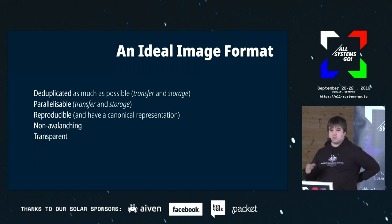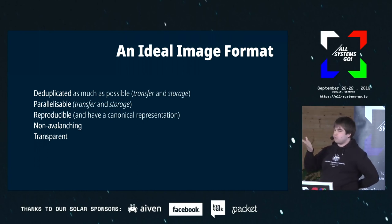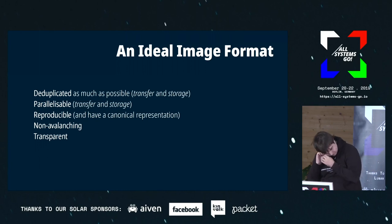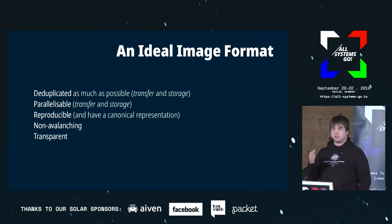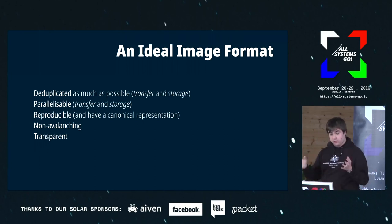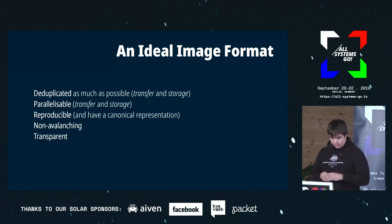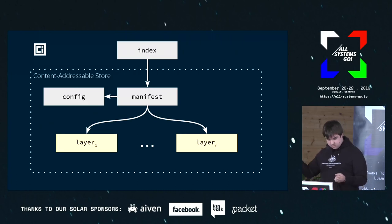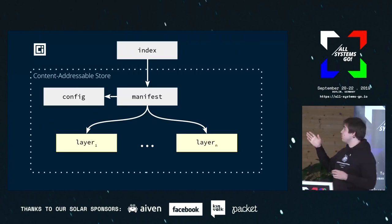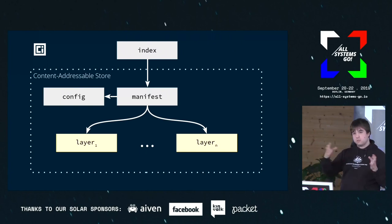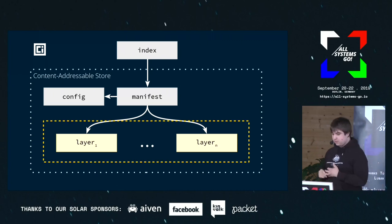Non-avalanching — borrowing a term from cryptography — means if you make a small change in a single file in a container image, you don't have to make an entire copy of the whole thing. And transparency relates to what is actually inside a container image. This is what an OCI container image looks like — the same applies to Docker images, the formats are basically identical. The main thing we're talking about today is the layers.